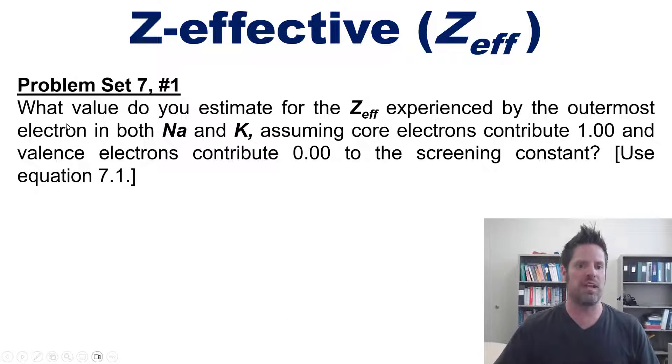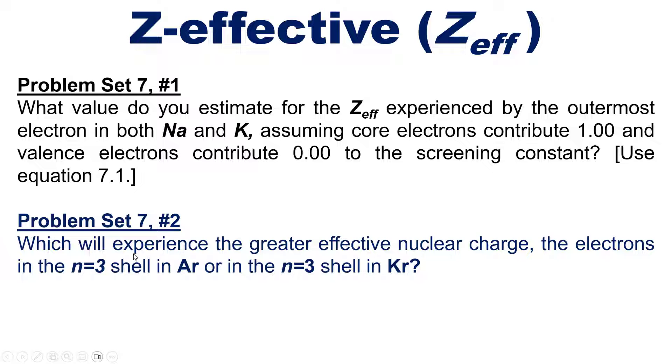Let's go to some problems. What value do you estimate the Z-effective experienced by the outermost electron in sodium and potassium? Next, which will experience the greater effective nuclear charge: the electrons in an n=3 shell of argon or in the same energy level for krypton? If you're interested in seeing the answers, I invite you to click the video floating over my head or in the description below. Until next time, please have an enjoyable rest of your day.